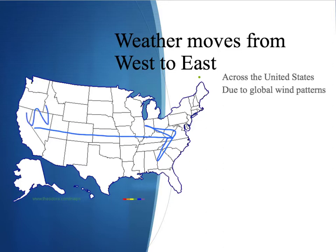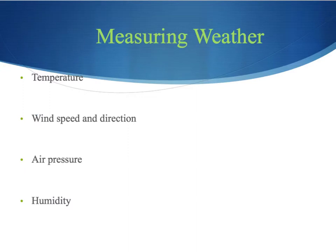Weather in the US moves from west to east. So whatever weather patterns originate in California make their way to the east coast, and that's how we're able to predict weather. In order to make weather predictions and forecasts, we measure temperature, wind speed and direction, air pressure, and humidity.